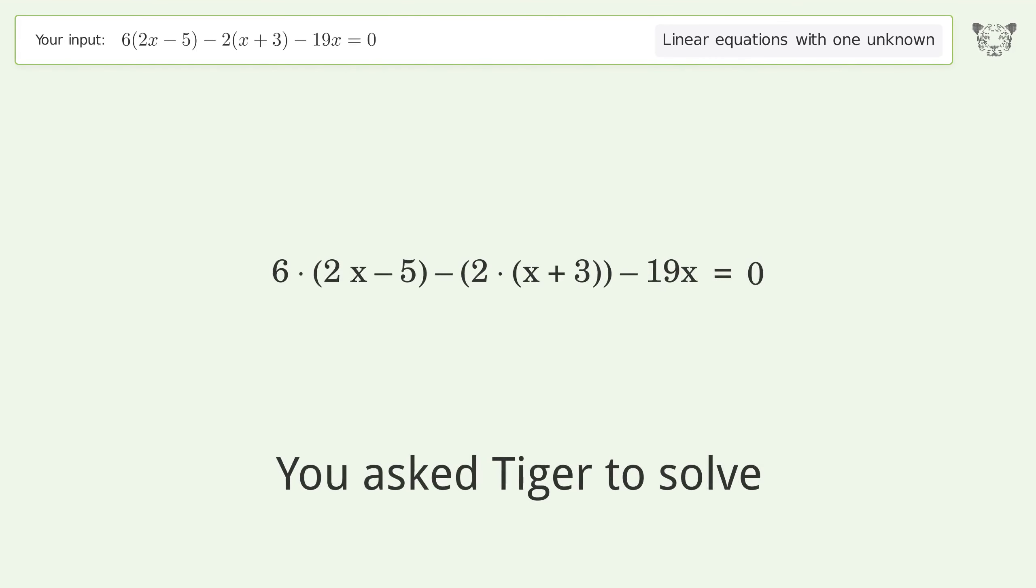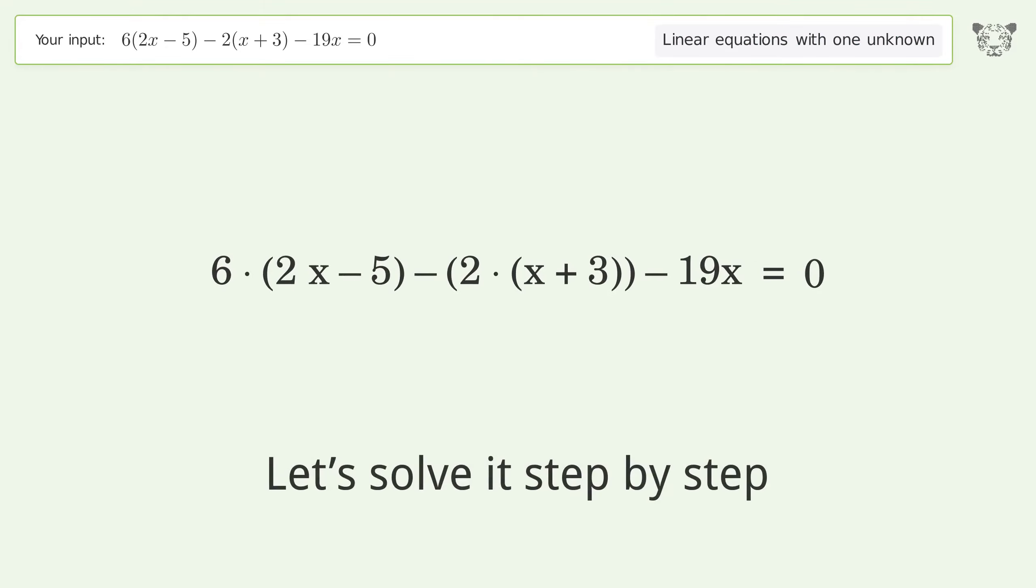You asked Tiger to solve this linear equation with one unknown. The final result is x equals negative 4. Let's solve it step by step and simplify the expression.